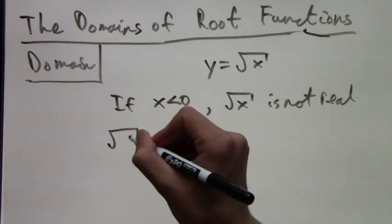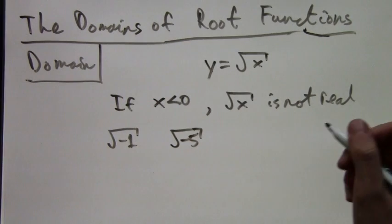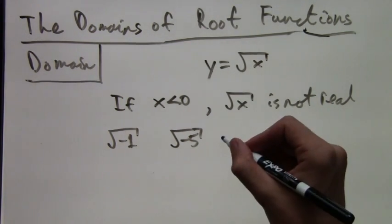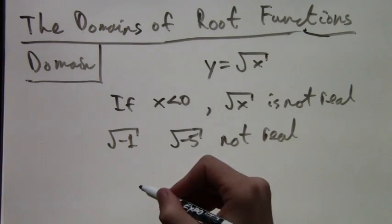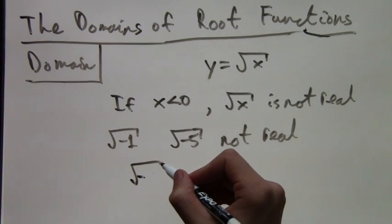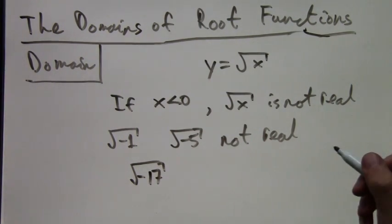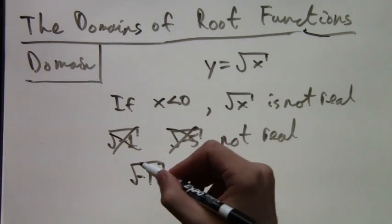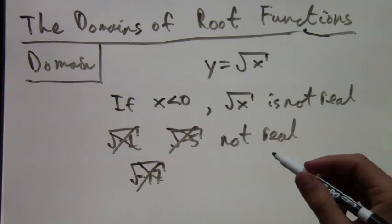For example, you can't take the square root of negative 1, and you can't take the square root of negative 5. This is because the square root of any number has to be positive or 0, but it can't be negative. Similarly, the square root of negative 17 is not real. None of these are defined, so none of them are in the domain.